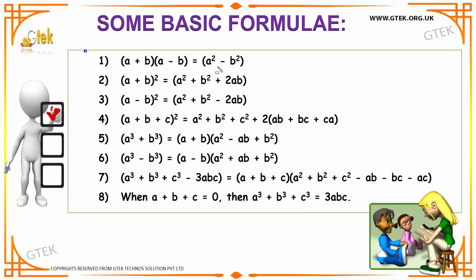We have our first formula which says (a + b)(a - b) is nothing but a² - b². A second formula says that (a + b)² is equal to a² + b² + 2ab. A third formula says that (a - b)² is equal to a² + b² - 2ab.